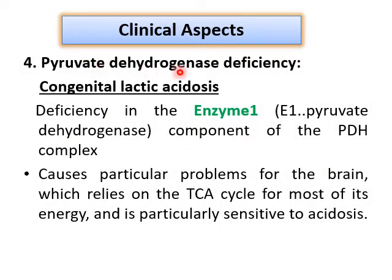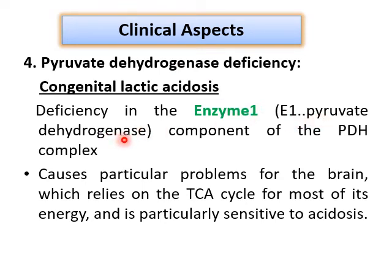If the pyruvate dehydrogenase enzyme is deficient due to mutations, it may result in congenital lactic acidosis, because pyruvate won't be converted into acetyl CoA and all the pyruvate would instead be converted into lactic acid. Congenital lactic acidosis has been observed due to deficiency of E1 (pyruvate dehydrogenase/pyruvate decarboxylase) of the PDH complex, and it may cause problems for brain cells since they depend on the TCA cycle for most of their energy.